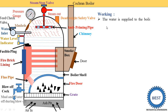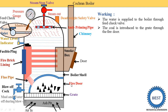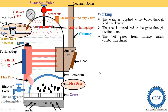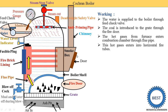Now we understand the working of the Cochrane Boiler. In the first step, water is supplied to the boiler through the feed check valve. Second, coal is introduced to the grate through the fire door — coal, oil, or wood can be supplied. The hot gases from the furnace enter the combustion chamber through the flue pipe, where combustion of the coal takes place and hot gases are produced. From the combustion chamber, these hot gases enter the horizontal fire tubes — here we have four fire tubes, though more than four can be used.